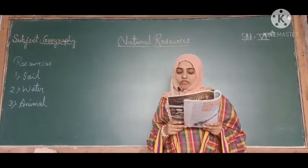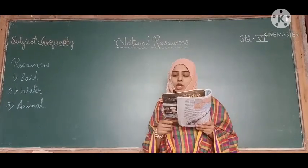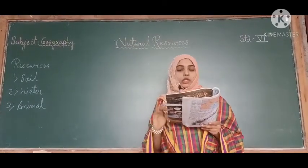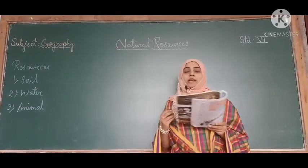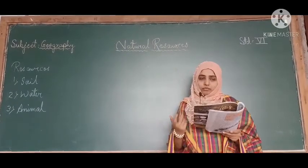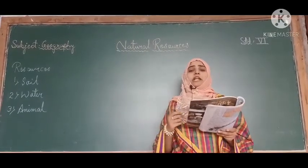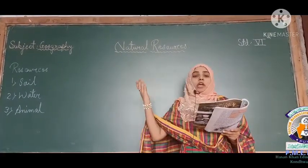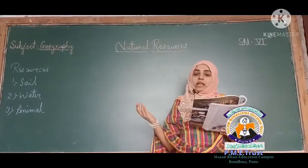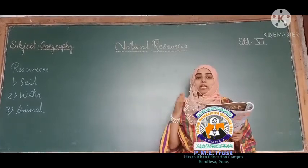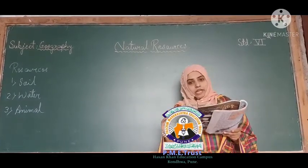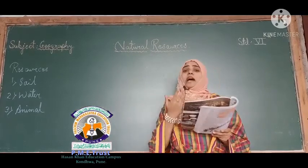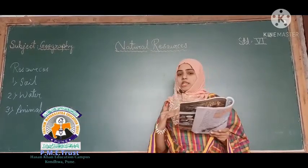The distribution of these living organisms, including humans, is not uniform. Obviously, the distribution of humans and animals is not uniform. Somewhere the population is very high but the animals are less. Somewhere the animals are high and the population is less.